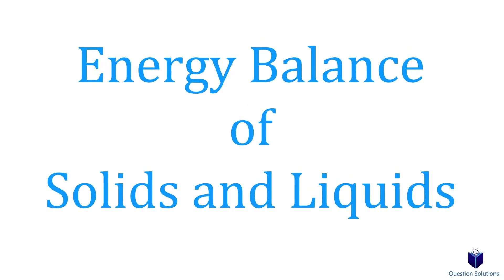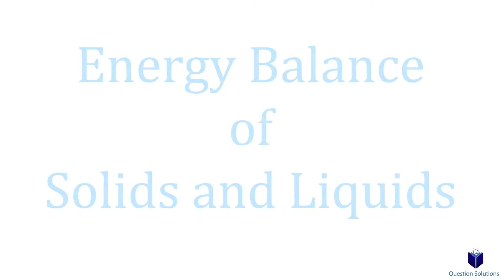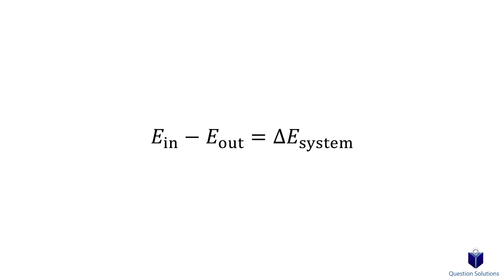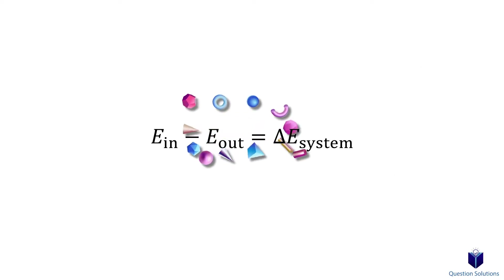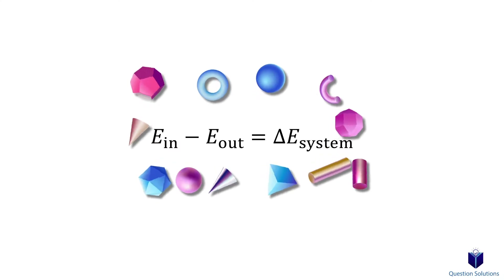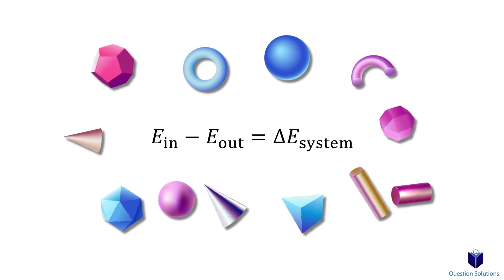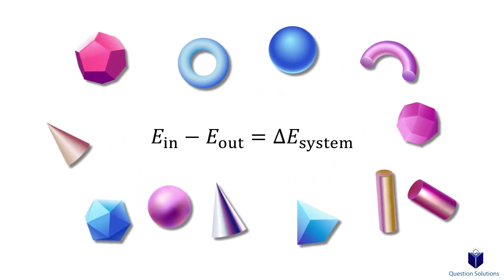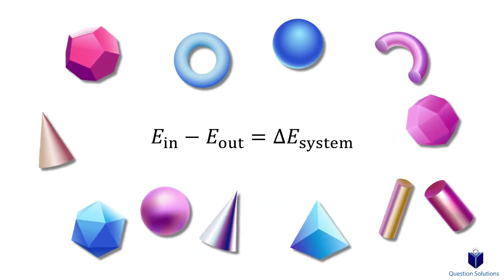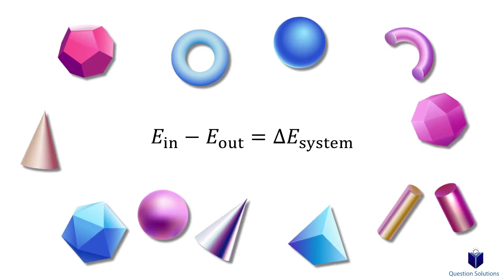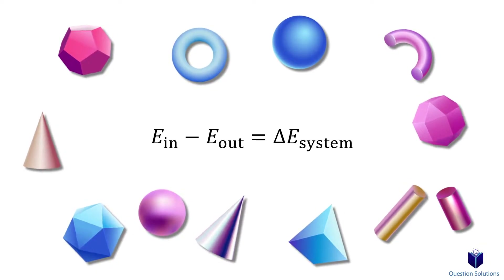In the previous video, we talked about energy balance and ideal gases. Today, let's discuss how to handle solids and liquids when it comes to energy balance. When we have a substance that has a constant specific volume or density, we call that an incompressible substance.